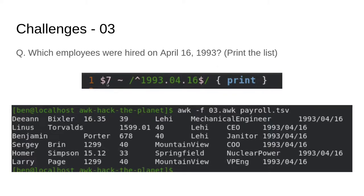We use the pattern with column seven, which is the start date. We do a regular expression match. I used a dot instead of the slash because slash is how we delimit our regular expression, so we'd have to escape it. So I have a habit of slapping dots in there because they match any character. We look for exactly 1993.04.16 and then the end, and when we find it, we just print dollar sign zero — the entire line.